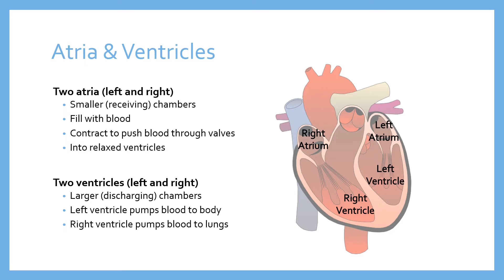The left ventricle sends blood to the body and the right ventricle sends blood to the lungs. They differ in size and particularly in wall thickness. The cardiac muscle wall is much thicker on the left side because the left ventricle is pumping blood to the entire body — a far greater distance than the right side, which only needs to pump to the lungs right next to the heart. The left side therefore requires much greater pressure and more powerful muscle.